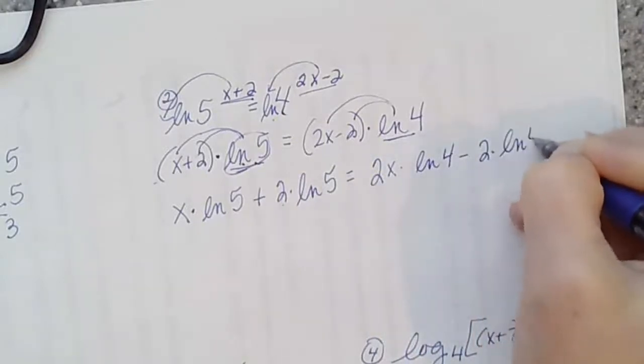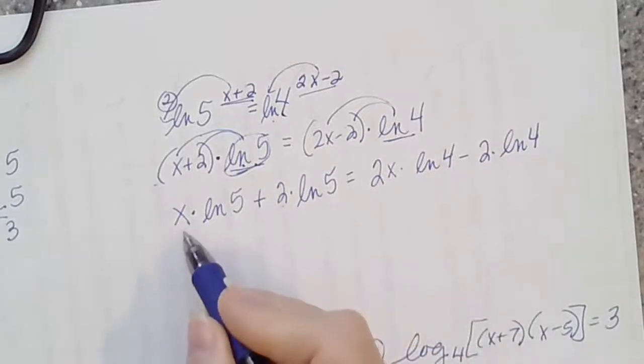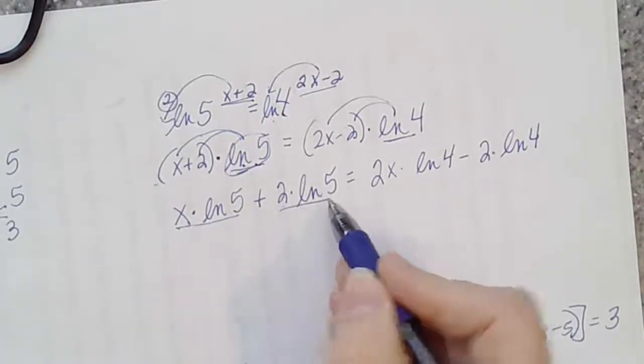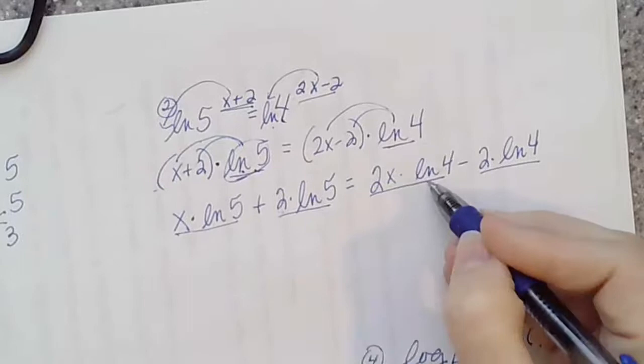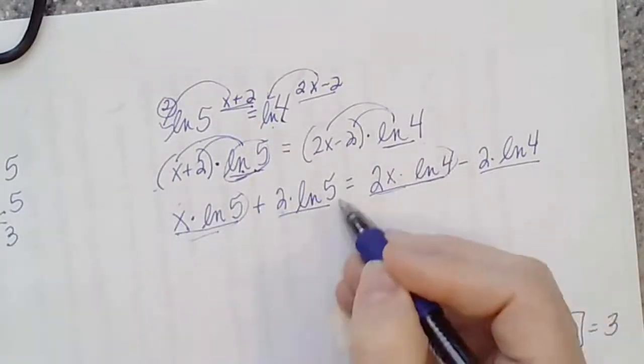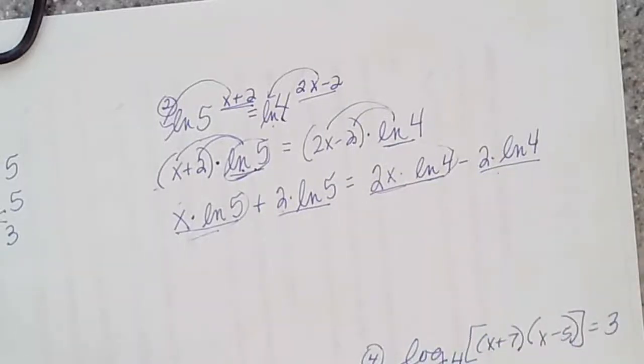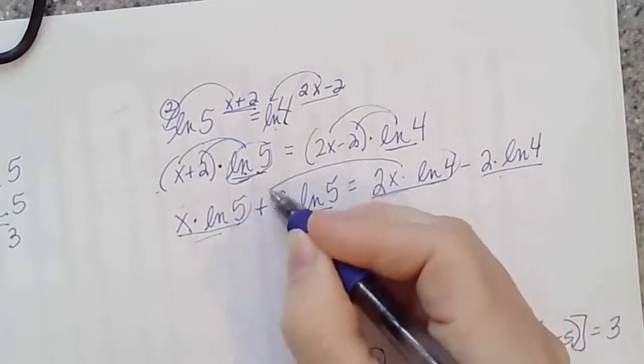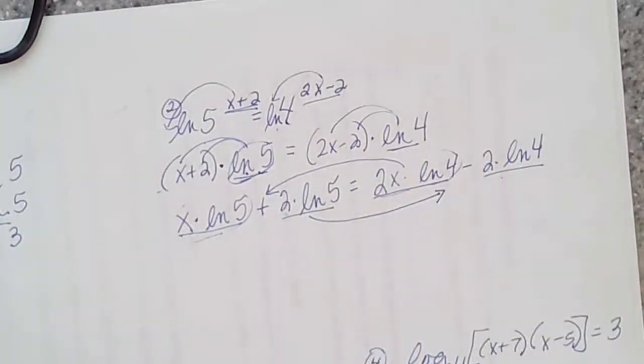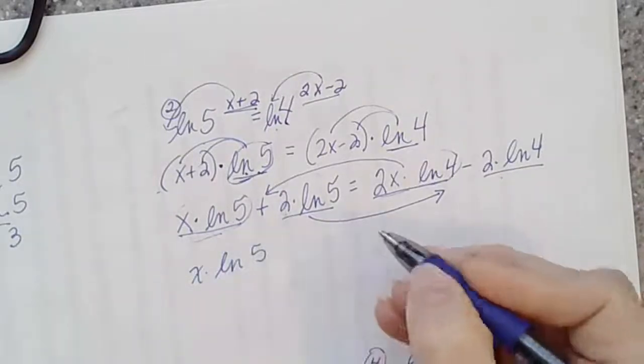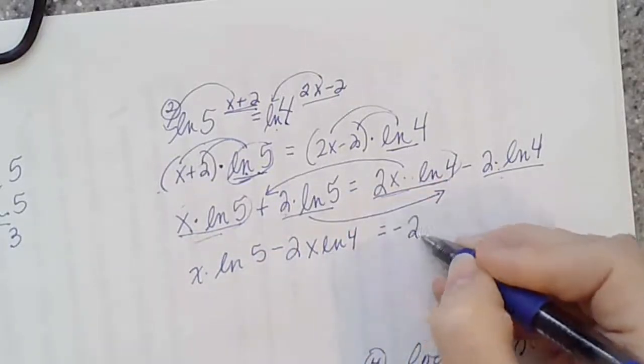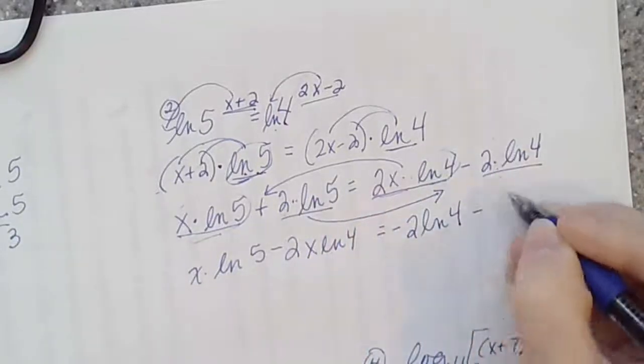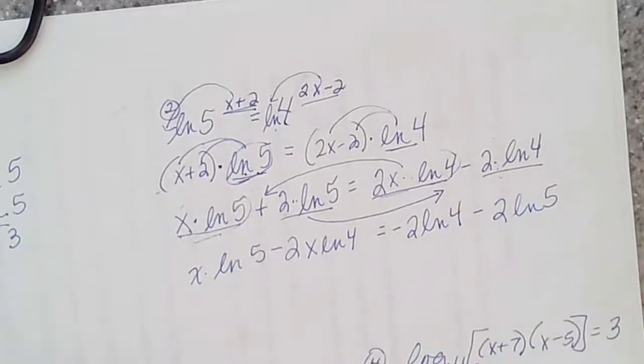So we'll have x times ln of five and 2 times ln of five, yet to be multiplied. Again, we could find that, but we don't want to yet. Over here, I'm going to distribute that multiplication. 2x times ln of four and minus two times ln of four. All right. So this looks like a mess. We've got actually four terms. There's one term plus, that's the second term. Here's a third term. Here's a fourth term. So it's just like algebra. You combine terms if you can. You move your variables to one side. So same old, same old. We've done this before. Notice that these two terms have x's in them, so they're all variable terms. And then these two are constants. So we want the variables on one side and the constants on the other side.